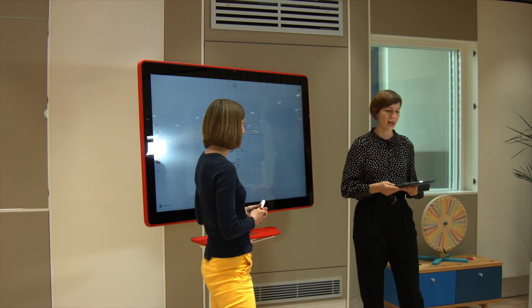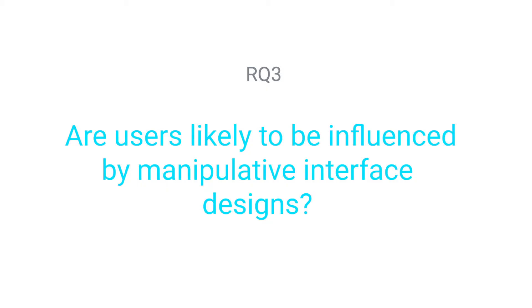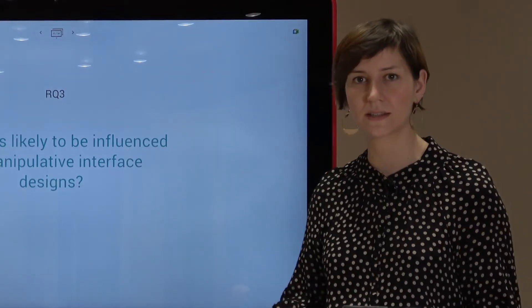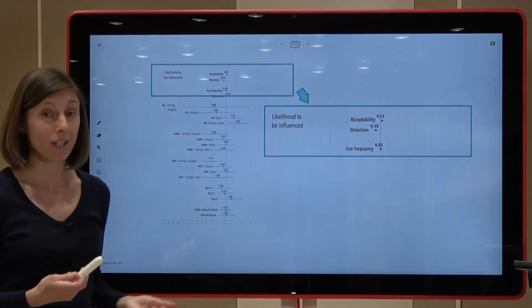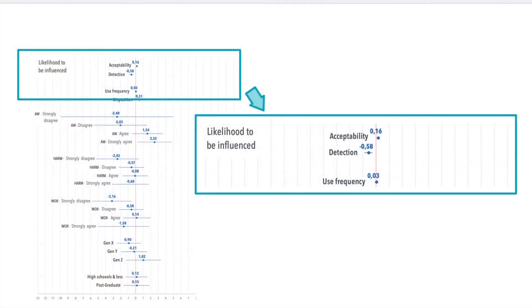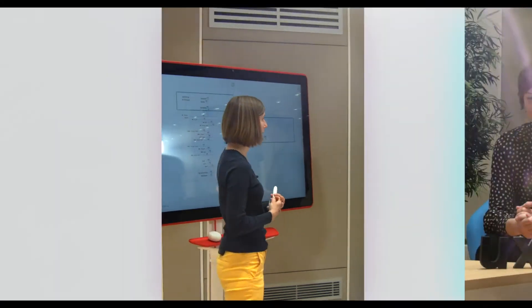For research question number three, we asked whether, notwithstanding the fact that people are aware of the existence of dark patterns and also able to recognize them, they are nevertheless susceptible to being influenced by them. Interestingly, we didn't find many predictors for people's likelihood to be influenced. The only thing we could see from the regression plot is a tendency of people who detect fewer dark patterns to also assume that they would be more influenced by those. So what we found is that people are quite able to recognize dark patterns and are also quite aware of the influence of manipulative designs on their behaviors. However, we found that awareness is not a significant factor in predicting people's ability to resist that influence.